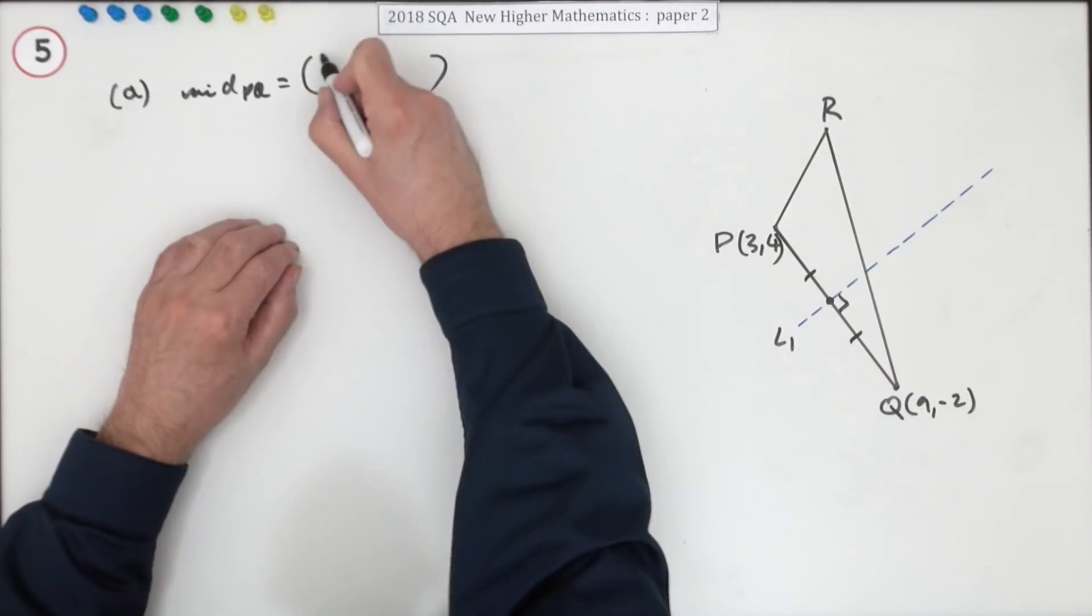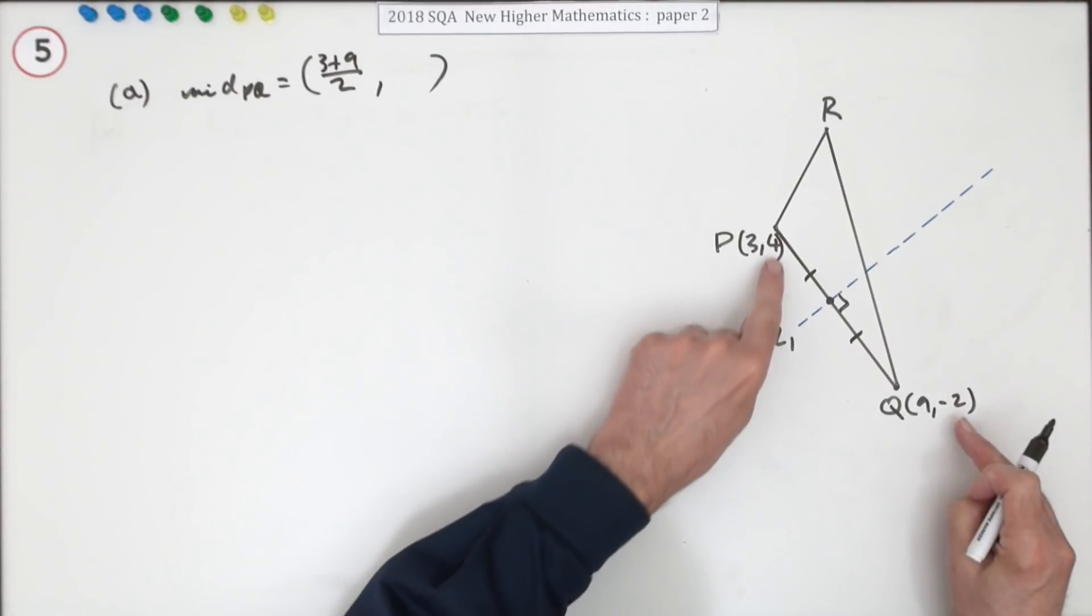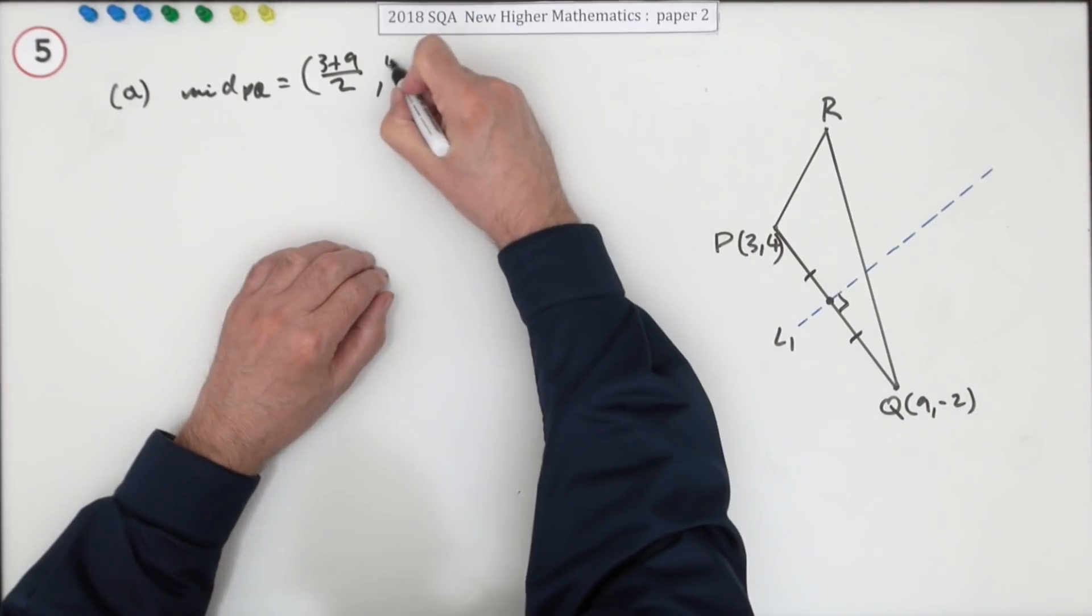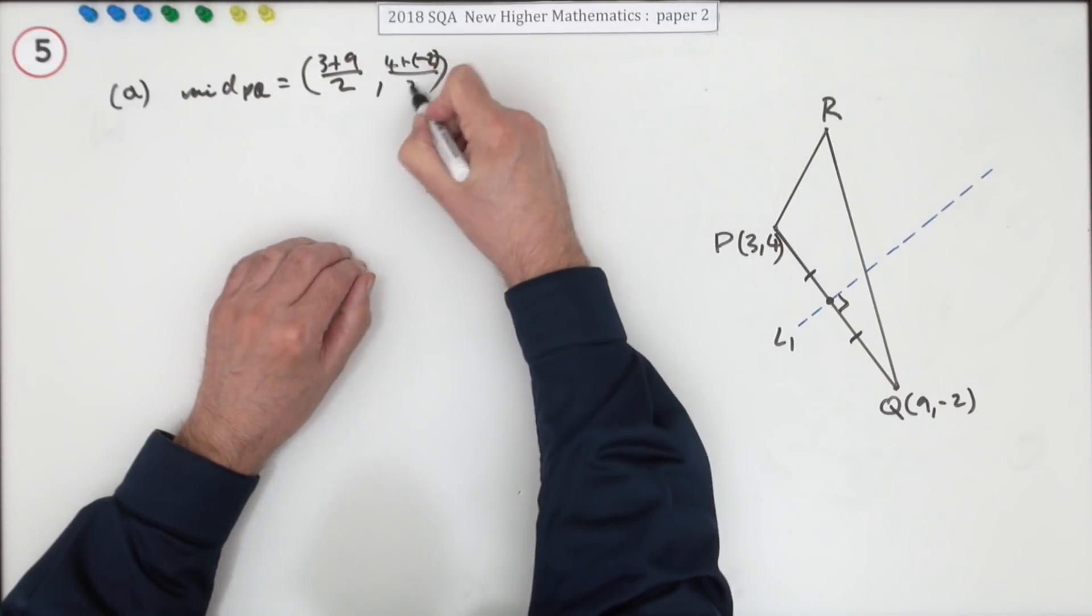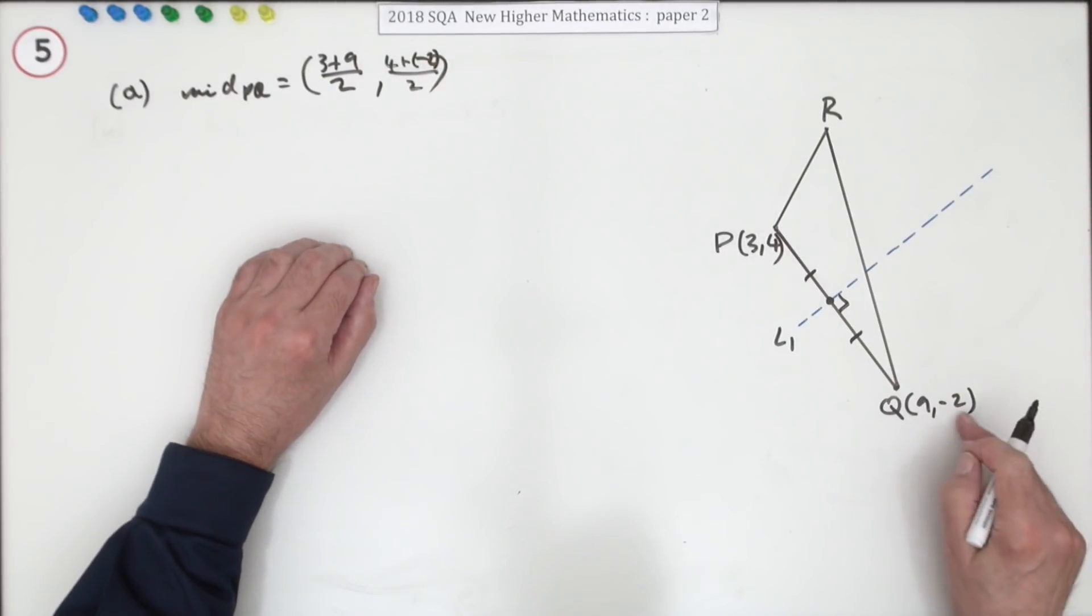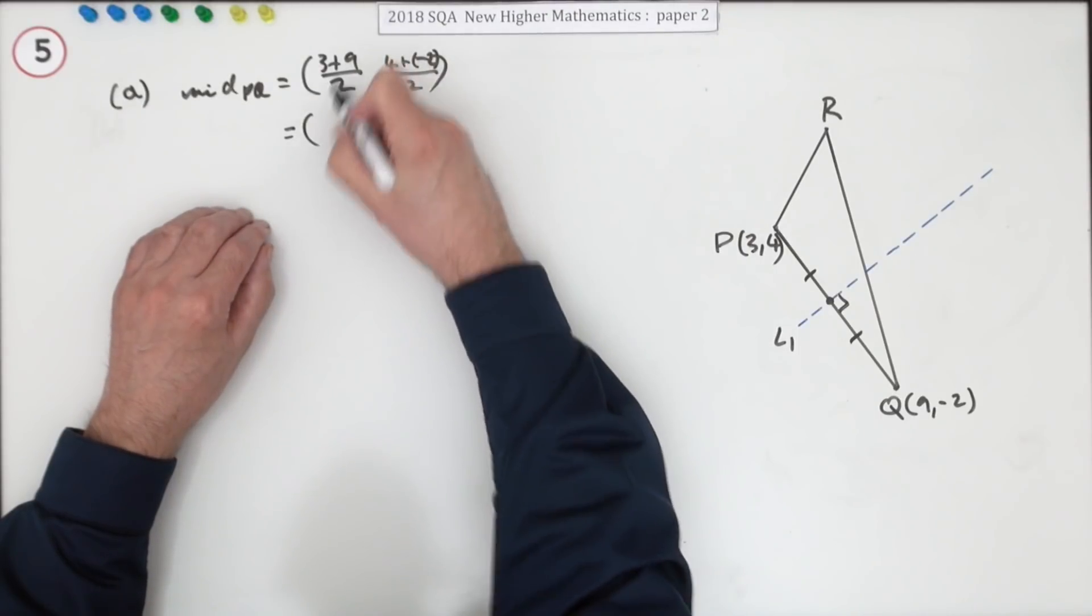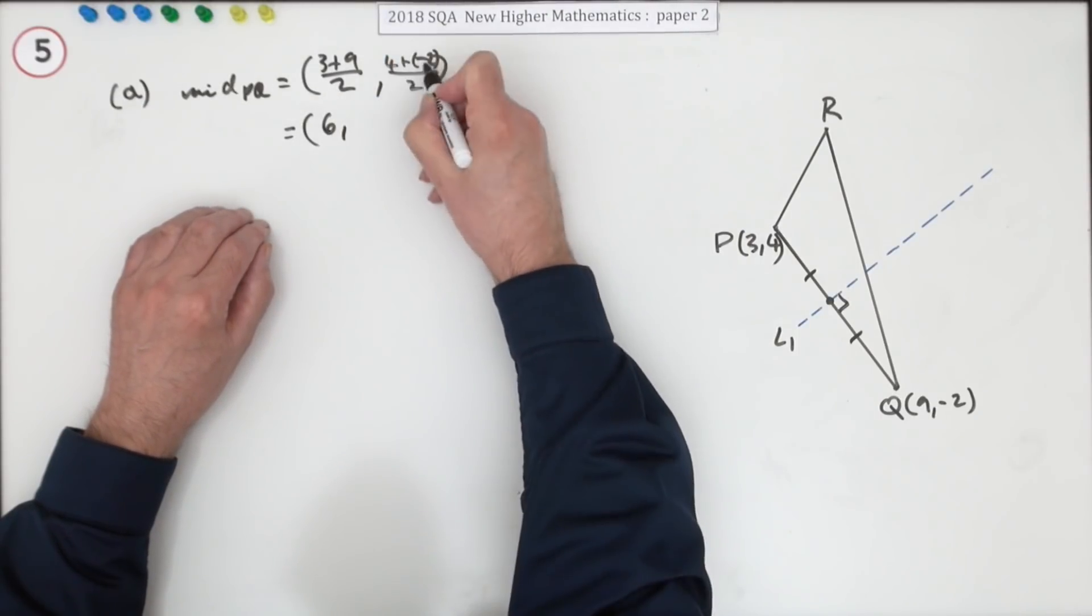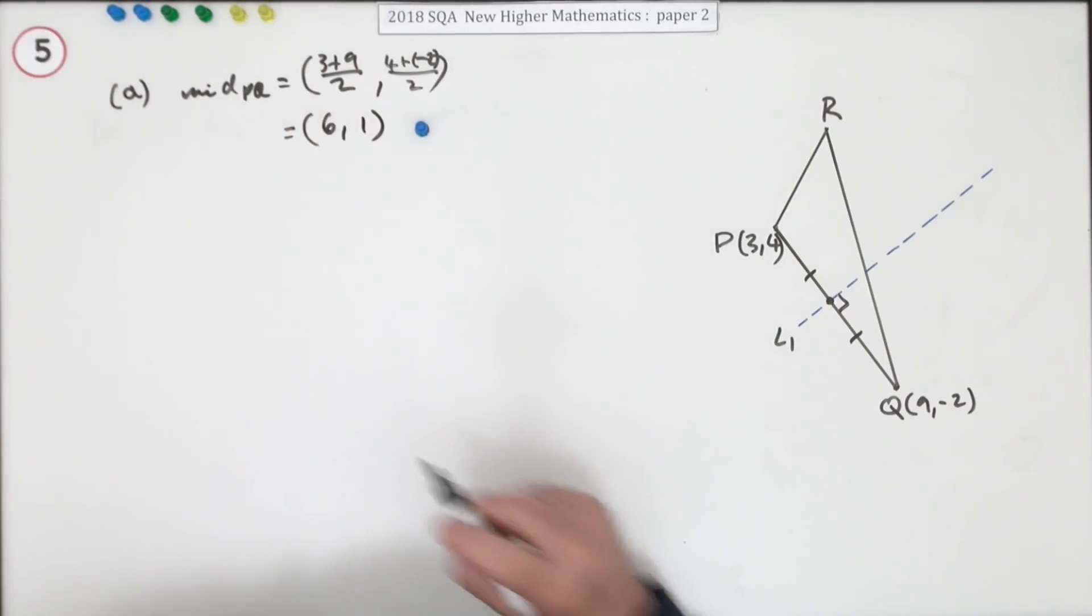So 3 plus 9 divided by 2 is the average of the x's. 4 and negative 2, I think I'll show it that way. 4 and negative 2, although that's just 4 minus 2 divided by 2, is the average of the y coordinate. Then that means that the point is going to be 12 over 2 is 6, and that just comes to 2 over 2 is 1. That's worth a mark.